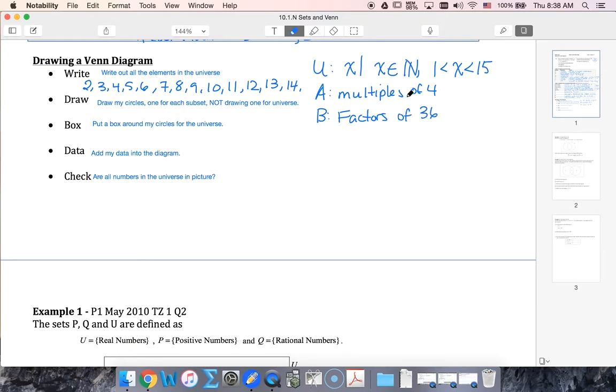All right, so I'm gonna start looking at my values in my universe and think about which of these are multiples of 4. So 4 is definitely a multiple of 4, so I'm gonna put an A next to it. So is 8 and so is 12.